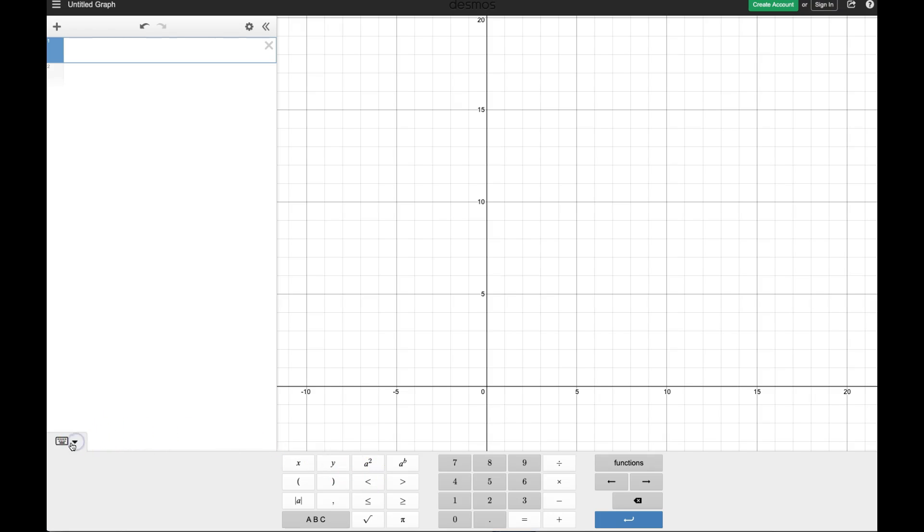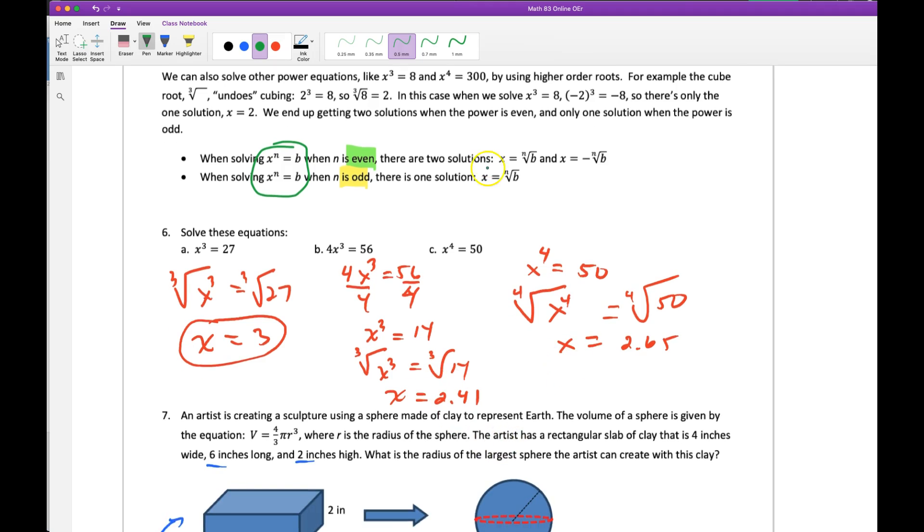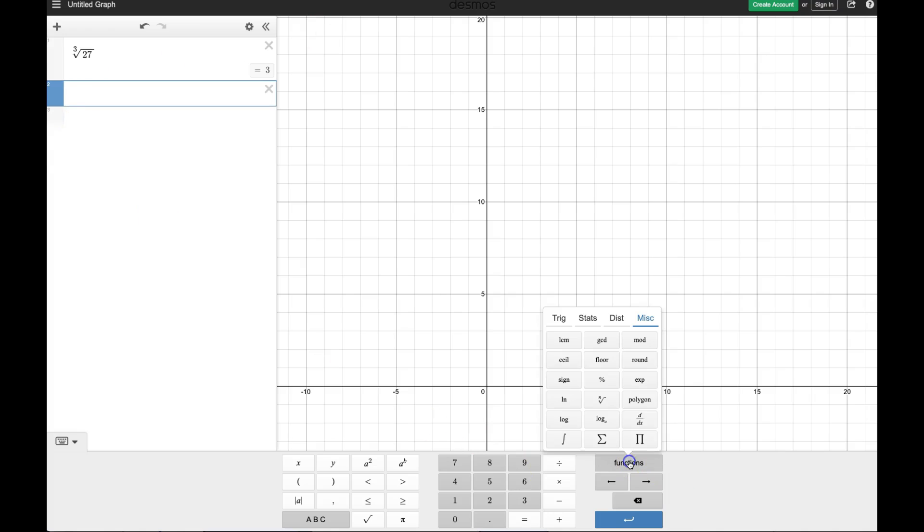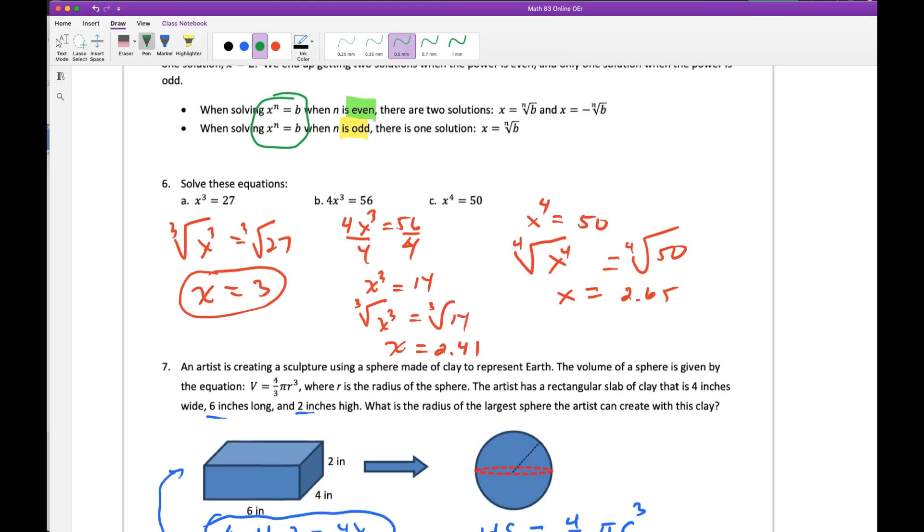So when you get to Desmos here, we need some special functions. You need the cube root. Right here is the cube root and the root. So you can hit that one. Notice that you get a little number there. We want the first one. The cube root of 27 equals 3. That's what we did here. Cube root, that 3 there. Here, cube root of 14. Again, you're going to use this special button here. Cube root. Put a 3 in there, and then 1, 4. And then you can see where you get your answer.